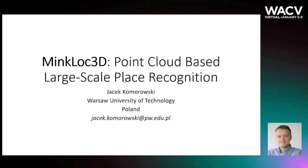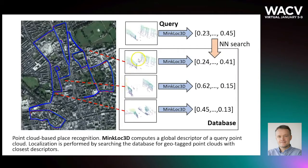I'd like to present our method called MingLoc3D for point cloud-based place recognition using a global point cloud descriptor. This slide illustrates the general idea behind place recognition based on a global descriptor. A global descriptor in the form of a low-dimensional real-valued vector is computed for each query point cloud and geotagged database point clouds. Localization is performed by searching the database for geotagged point clouds with closest descriptors.